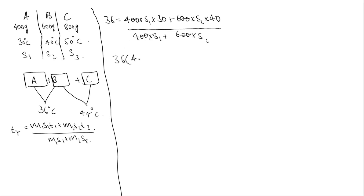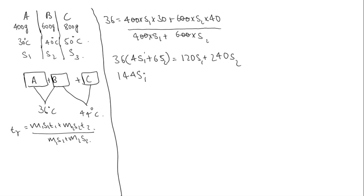After cancelling zeros, 36 into 4S1 plus 6S2 equals 4 into 30·S1, which is 120S1, plus 40 into 6·S2, which is 240S2. So 36 into 4 is 144S1 plus 36 into 6 is 216S2, and this is equal to 120S1 plus 240S2.